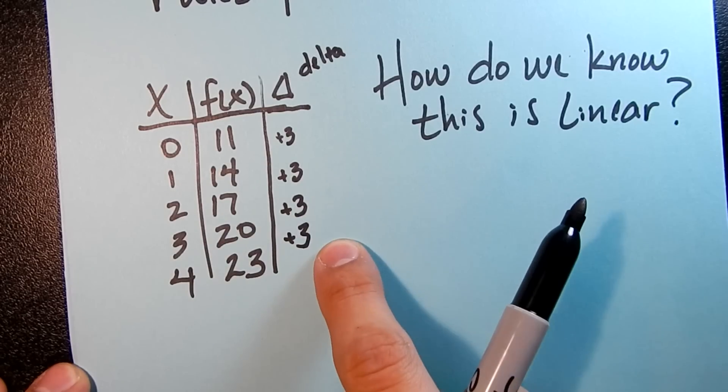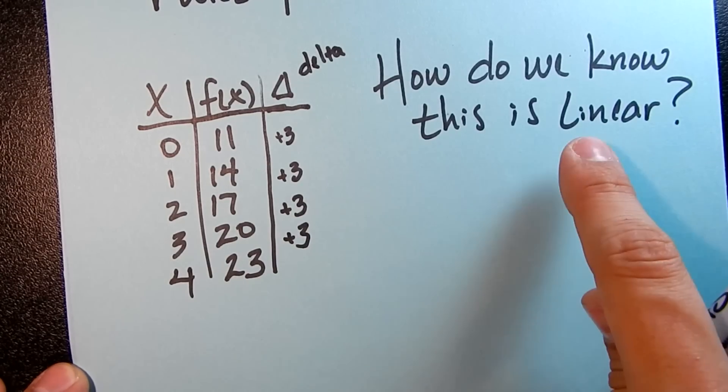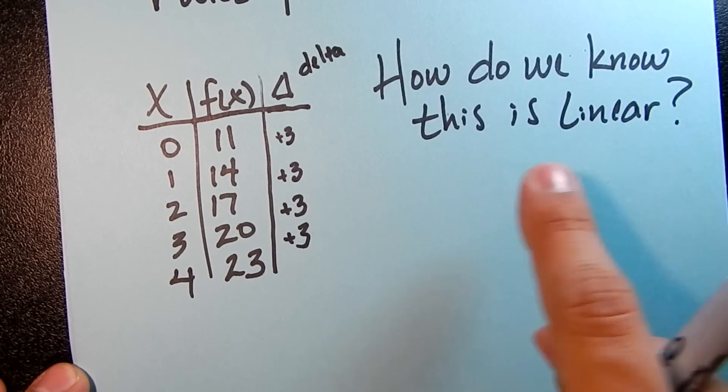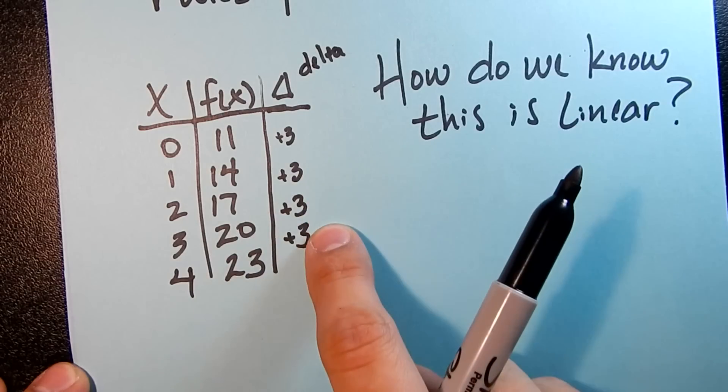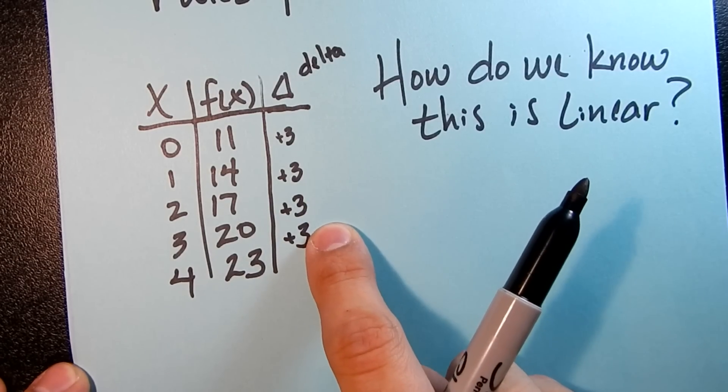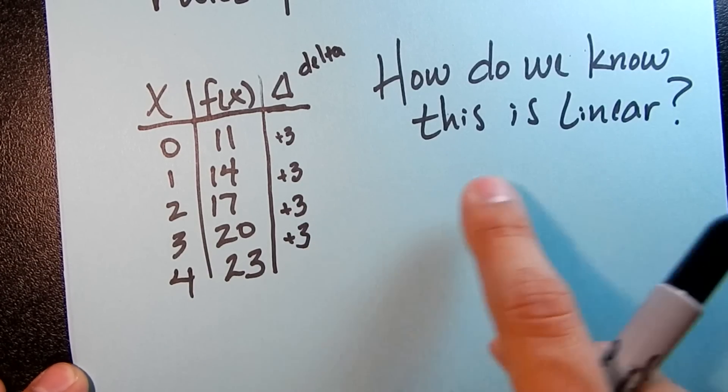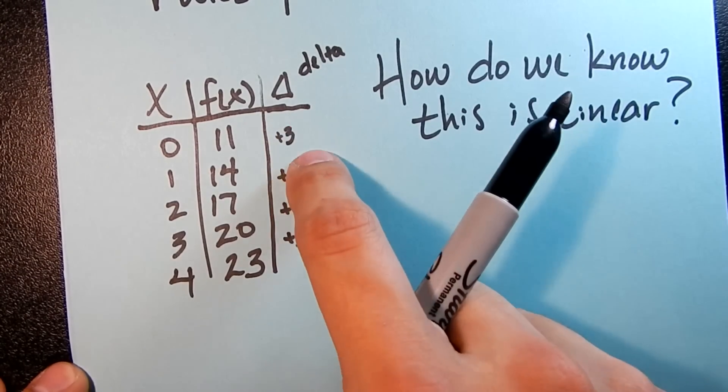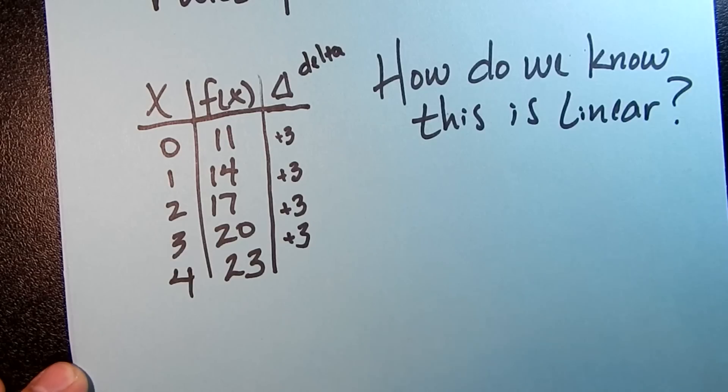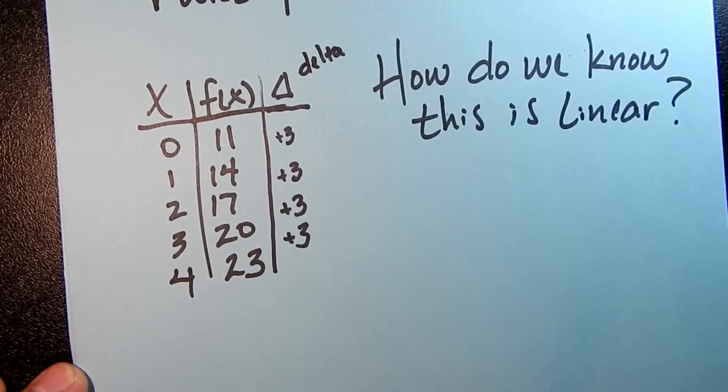This is what indicates to us that this is a linear function. If your delta is constant, if you have a constant number here, then that means you have a linear function. If these numbers differ at all, then it's not a linear function. It's something else.